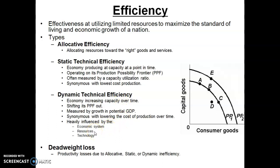Resource increases can also do this. If we find more natural resources, acquire more capital, or grow the population, those can all shift our production possibilities frontier out, creating dynamic technical efficiency over time. And then technology can also do this — getting more out of our resources.